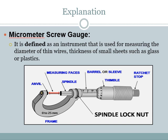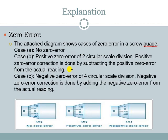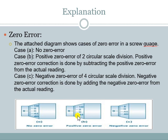Now we move to the zero error and least count of the screw gauge. Three diagrams are given on screen: A, B, and C. In the first case, you can see that the zero of the circular scale is coinciding with the zero of the index line — both zeros are coinciding with each other — which means there is no zero error. In the next case, the zero of the circular scale is behind the zero of the index line, and both are not coinciding. If the zero of the circular scale is behind the zero of the index line, then the error will be a positive zero error.